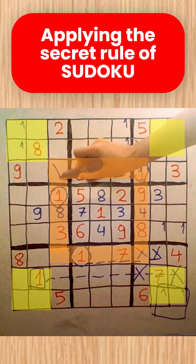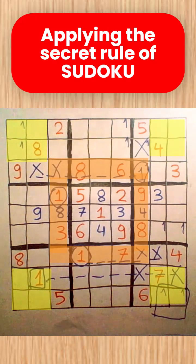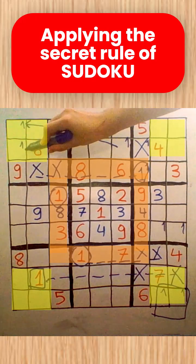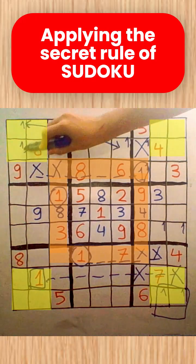After this move, I cross out these cells, which means that no more 1s can be placed either in the orange area or in the yellow area. I also notate the previously mentioned X-Wing.